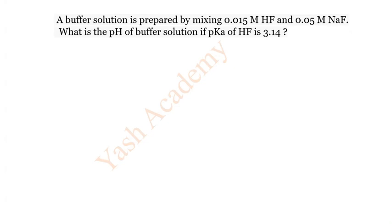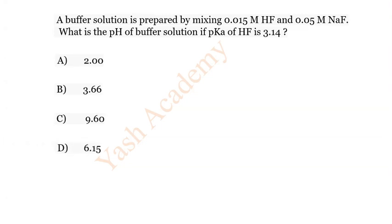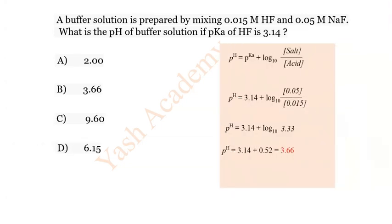Question 21: A buffer solution is prepared by mixing 0.015 M HF and 0.05 M NaF. What is the pH of the buffer solution if pKa of HF is 3.14? Options: A) 2, B) 3.66, C) 9.60, D) 6.15. The correct answer is B) 3.66.